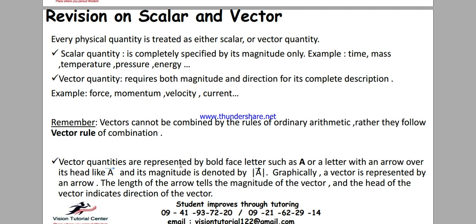Every physical quantity can be treated as either scalar or vector. Scalar means it is completely specified by its magnitude only. For example, time, mass, temperature, pressure, and energy — you couldn't have a direction for these quantities. So they are only specified by magnitude, and we call them scalars.